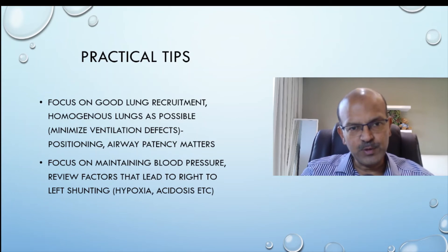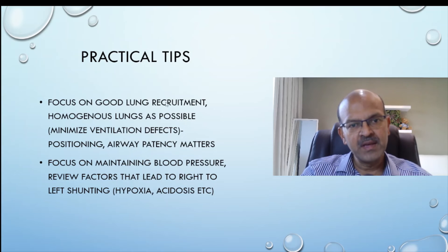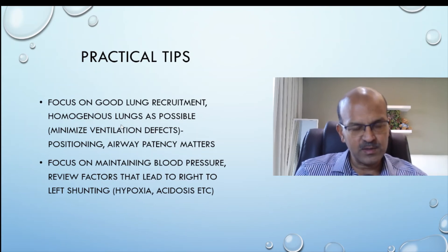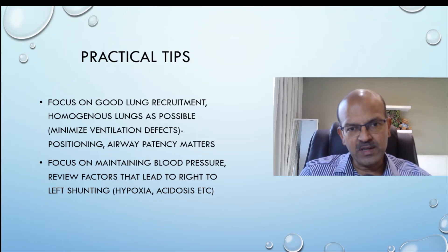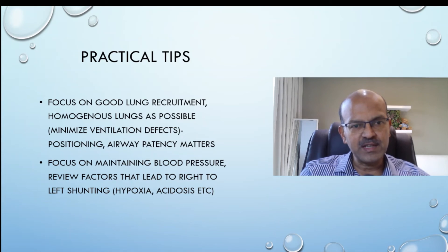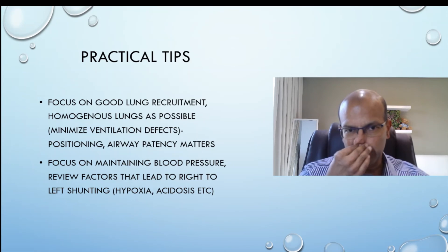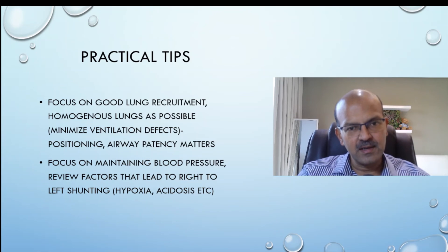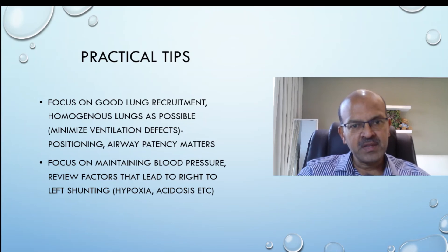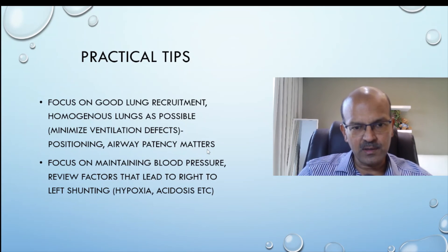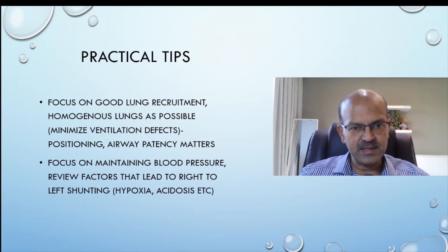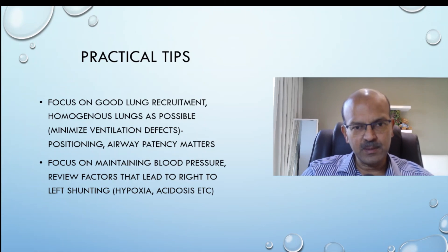It's a vast topic, so just a few practical tips: focus on good lung recruitment. Homogeneous lungs are much easier to ventilate because ventilation perfusion mismatch is reduced. We should position the baby appropriately — for example, if a baby has a collapse, the collapsed lung should be on the upper side. With pneumothorax, you may want to keep that side dependent so the other lung can open up better. Airway patency matters — humidification, suction, good nursing care, and regular position changes are all important. Head elevation is also likely to help reduce the risk of reflux.